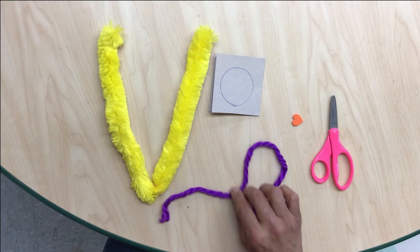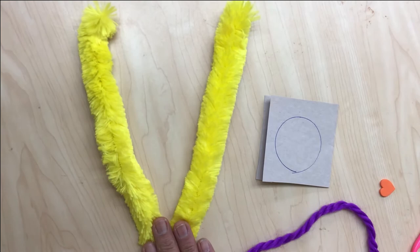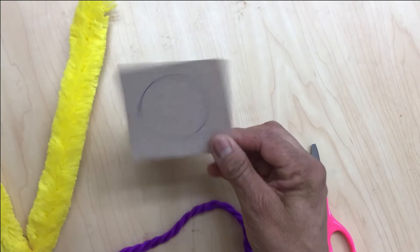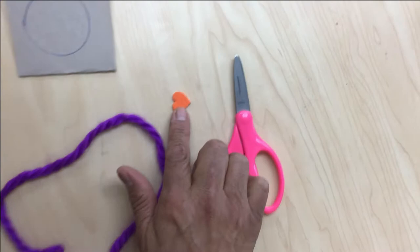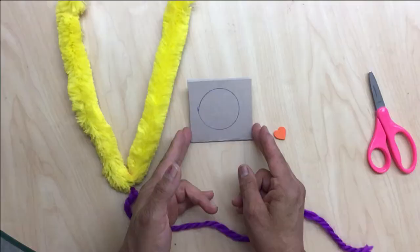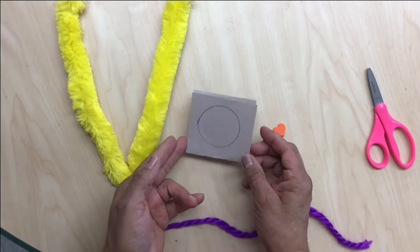So for this project to create our own stethoscope, we're gonna need a big pipe cleaner, a folded paper that has a shape of a circle to create two circles, a yarn, a heart sticker, and scissors.